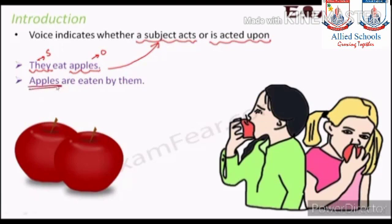If you think active and passive is difficult, don't worry — it's quite easy. The object goes first, then the helping verb according to the tense, then the verb in third form, then 'by,' and finally the subject at the end. That is the structure for converting active to passive.